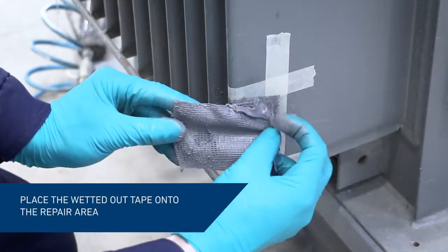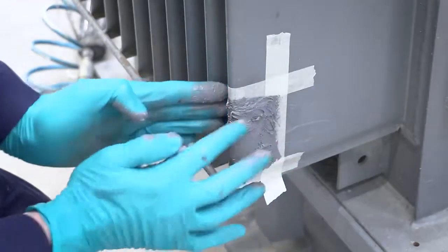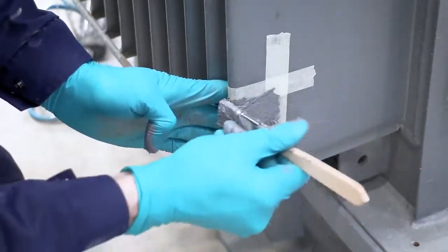Immediately embed the wetted out reinforcement tape into the applied material and encapsulate it with another layer of Belzona 1212.